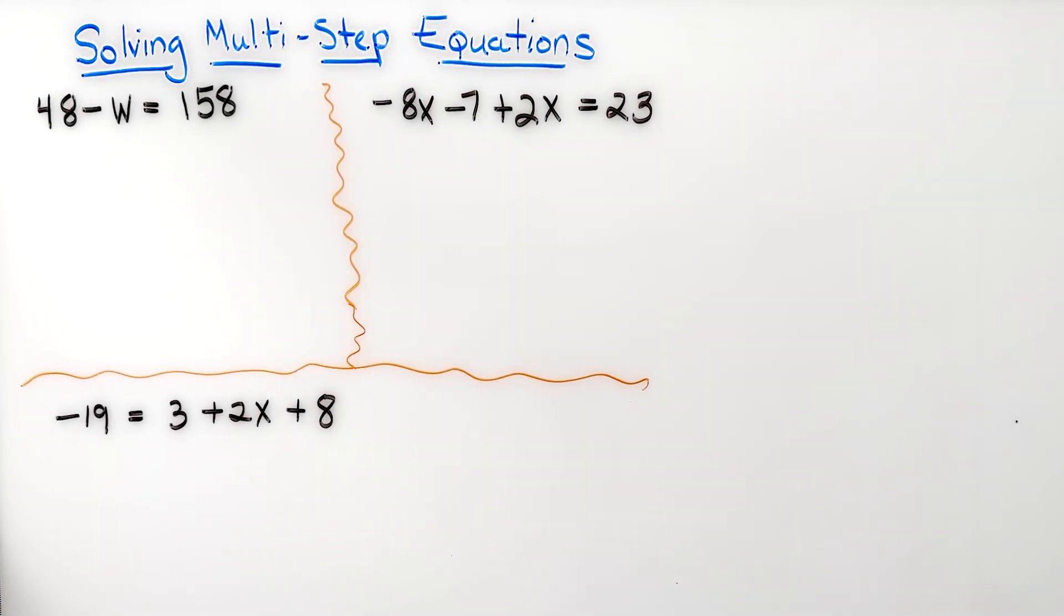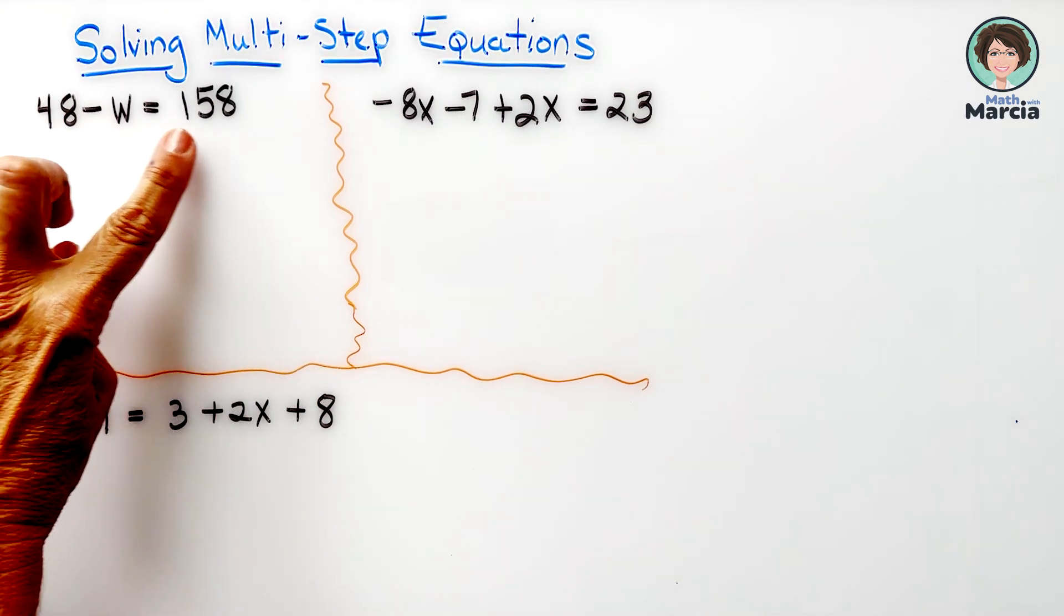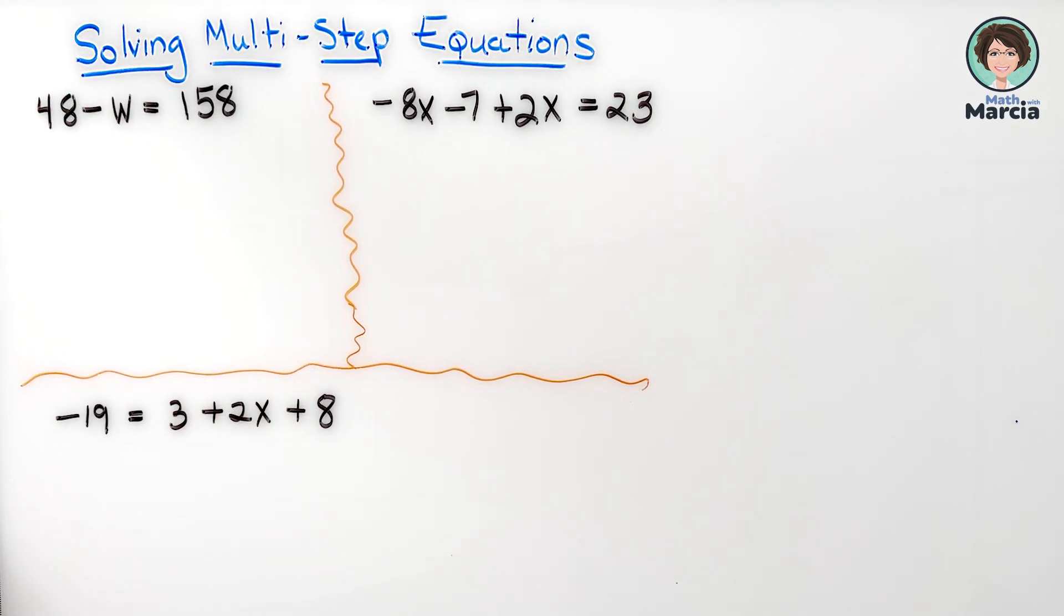For this lesson we'll be solving three multi-step equations. The first equation is 48 minus w equals 158.